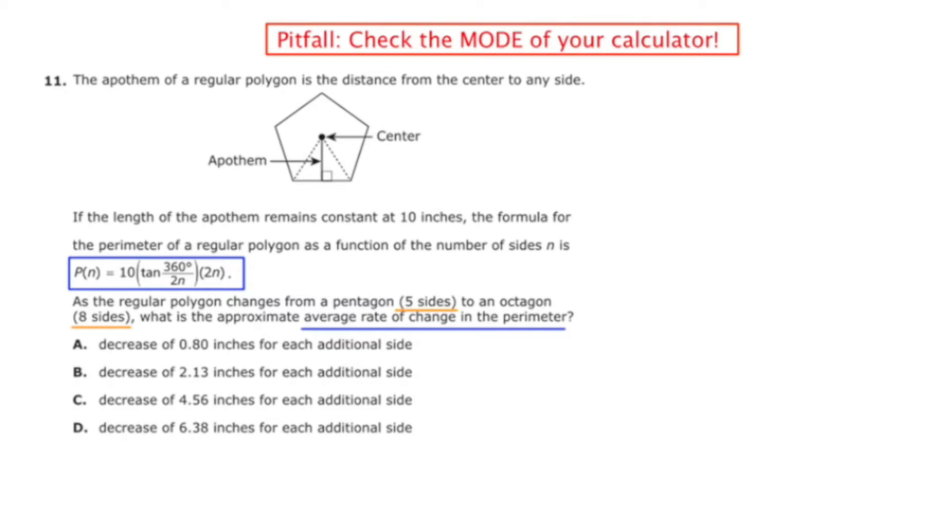As the regular polygon changes from a pentagon with 5 sides to an octagon with 8 sides, what is the approximate average rate of change in the perimeter?